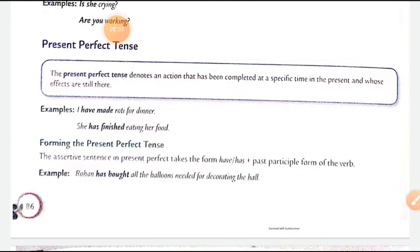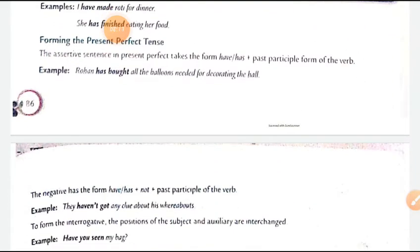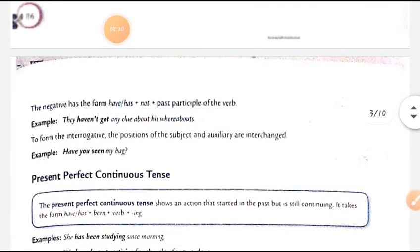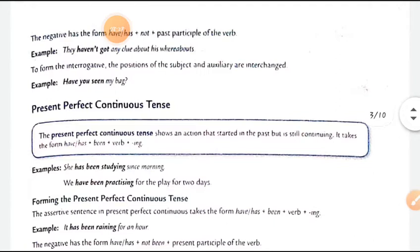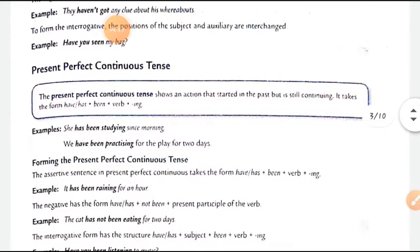For example: 'Rohan has bought all the balloons needed for decorating the hall.' 'Has' is used with singular subjects and 'have' with plural. The verb used is the past participle (third form, with 'ed' or 't'). For the negative: has/have + not + past participle. For the interrogative, has/have comes first. For example: 'They have not got any clue about his whereabouts.' 'Have you seen my bag?'